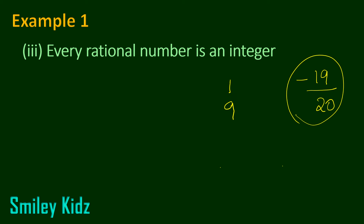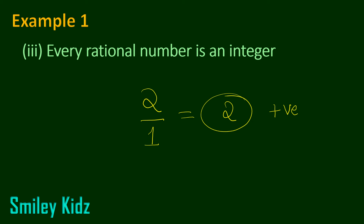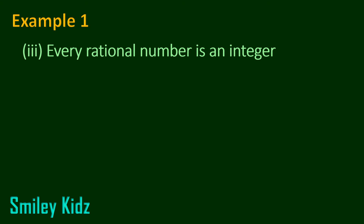So not all rational numbers are integers. Why not all? Because 2 is a rational number — it can be expressed as 2 by 1 — and also 2 is an integer, a positive integer. So this is an integer. But not all rational numbers are integers. Like 11 by 9 and minus 19 by 20 — these are rational numbers, but they are not integers.